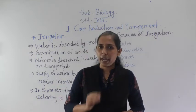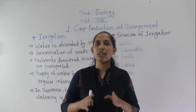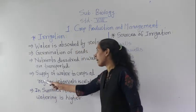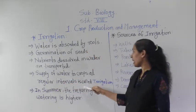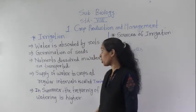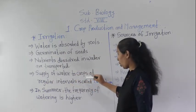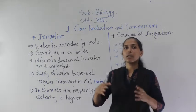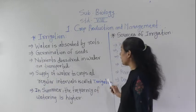That is the reason farmers provide water to the field at regular intervals of time. The supply of water to crops at regular intervals is called irrigation. Regular intervals means after a certain period of time. So this method is called irrigation.